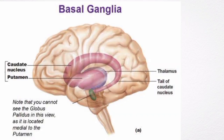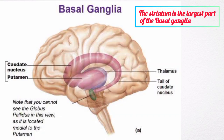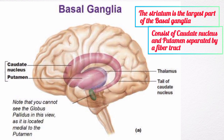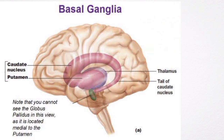The striatum is the largest part of the basal ganglia. It consists of two connected clusters of cell bodies: the caudate nucleus and the putamen, which are separated by a fibre tract.